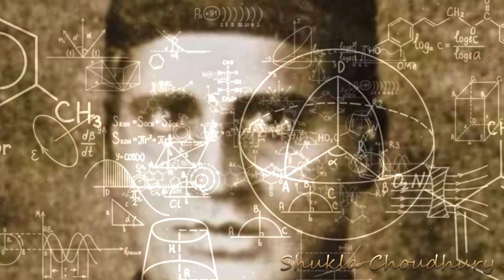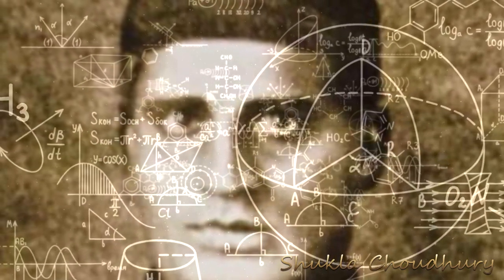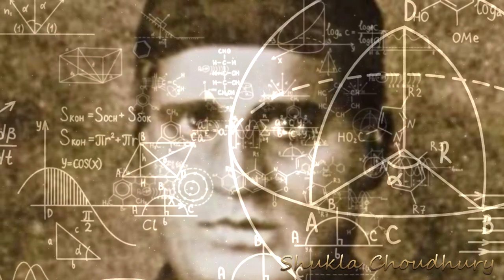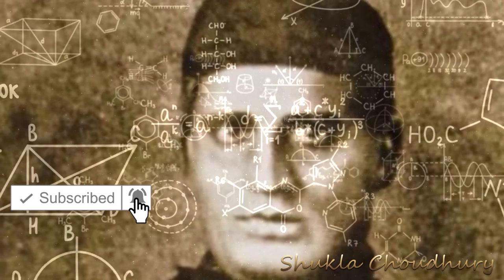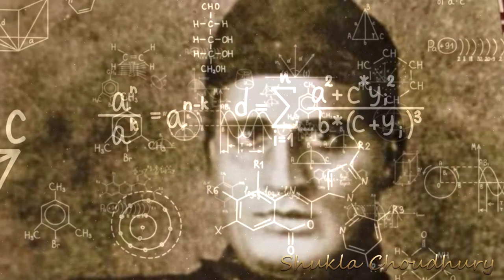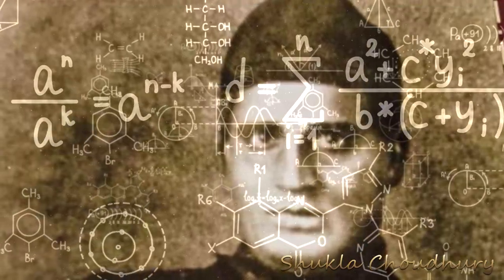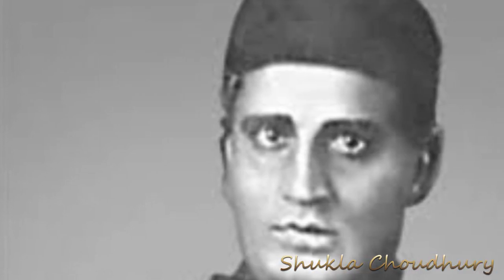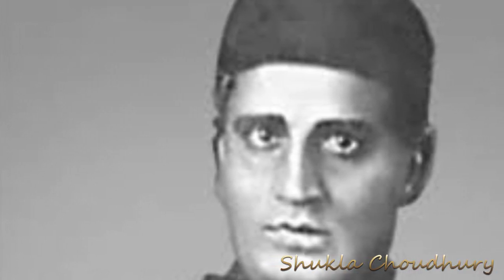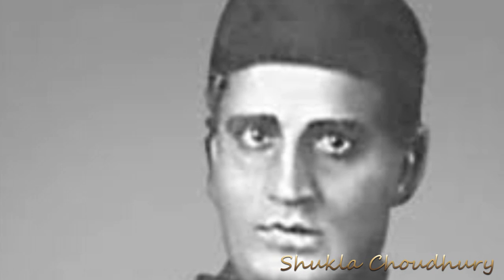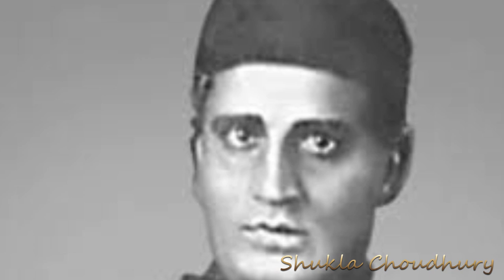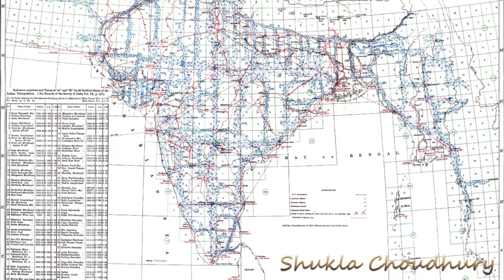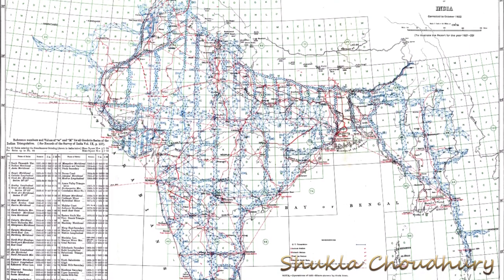Taking inspiration from these prestigious works, he devised a new method to draw a common tangent to two circles when he was just a teenager. There was little doubt about Radhanath's proficiency in mathematics, and he secured a job at the Great Trigonometrical Survey on 19th December 1831.